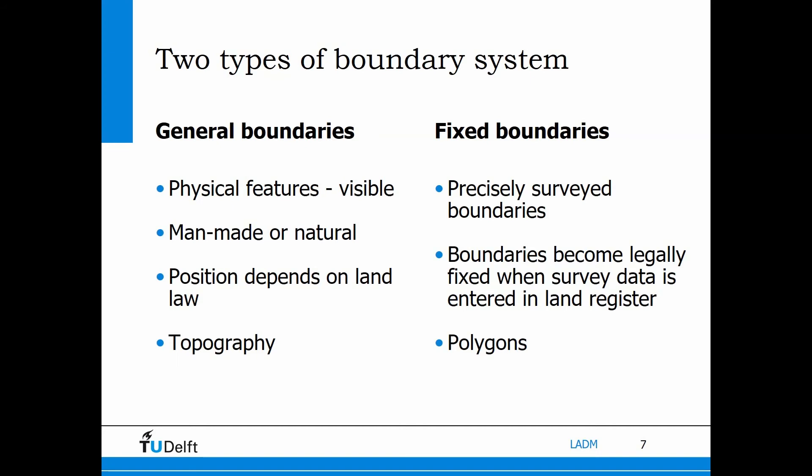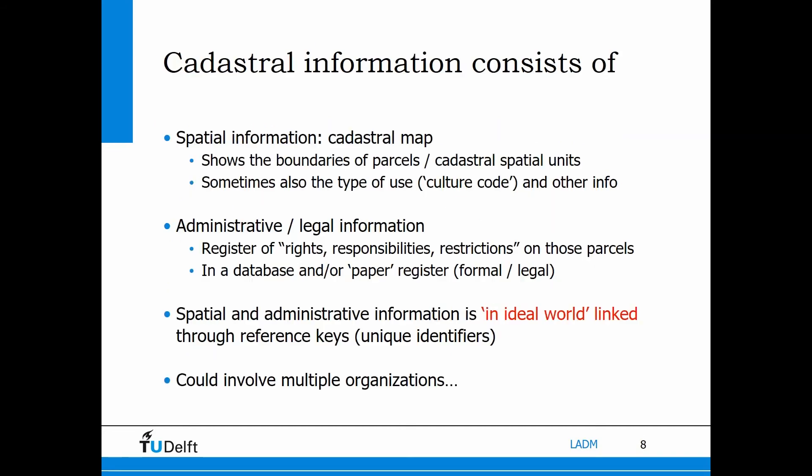The other type is called fixed boundaries. These are not directly related to real world features, but are precisely surveyed boundaries where buyer and seller agree on the location of the boundaries — also called coordinate cadastres. So cadastres consist of two types of information: the spatial information — the maps, the boundaries, parcel identifiers — and the administrative information, legal information: what rights or restrictions apply to the parcels, which persons are involved. And of course these two should be linked. The tricky part is that multiple organizations are often involved.